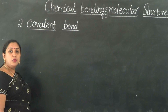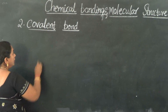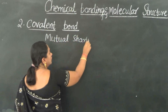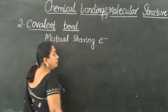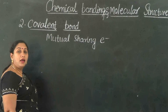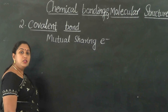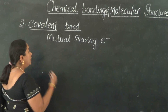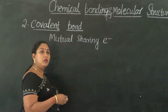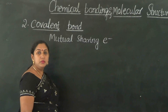Let us understand about covalent bond formation. A covalent bond is a bond which is formed by the mutual sharing of electrons. Unlike the ionic bond, which is formed by complete transfer of one or more electrons from the valence shell of one atom to another, here electrons are not completely transferred. The participating atoms donate an equal number of electrons to a common electron pool, which is then shared among the constituent atoms equally.